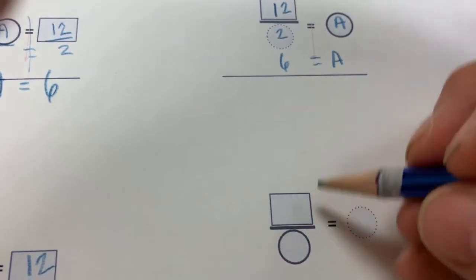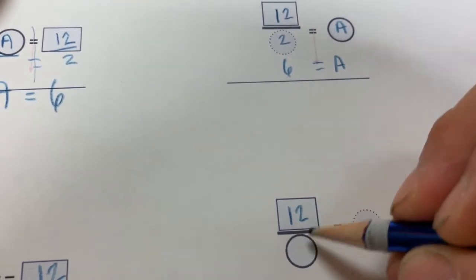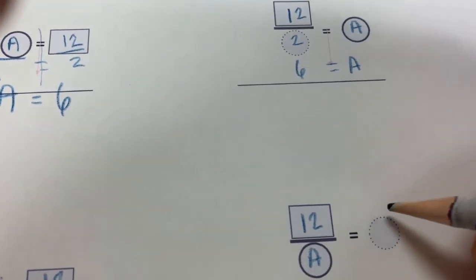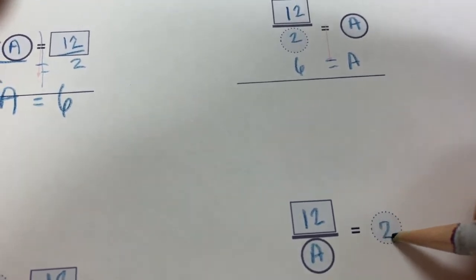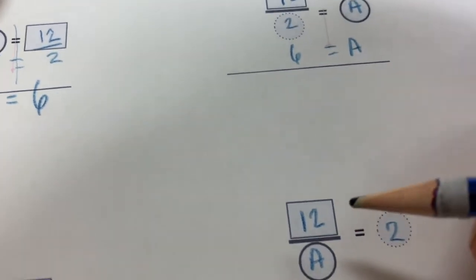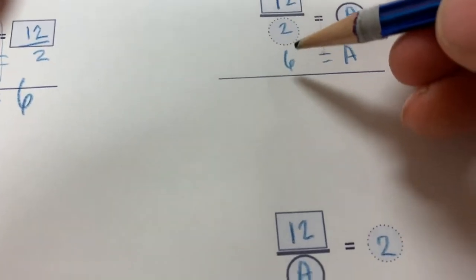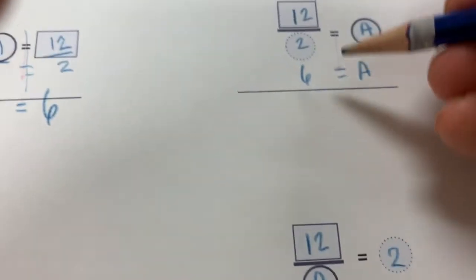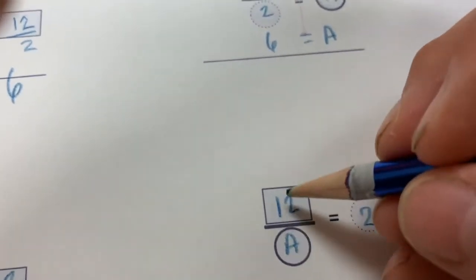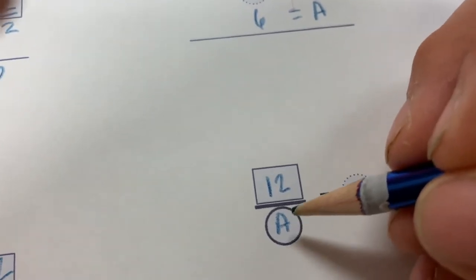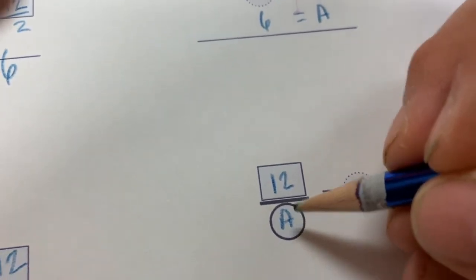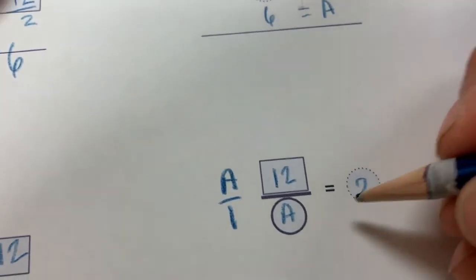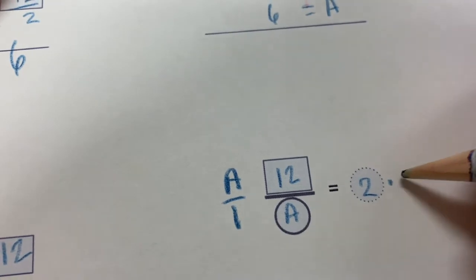This is going to be the most complicated by far. 12 divided by A equals 2. Now what you have to do is the same thing we've been doing formulaically up here. See what's happening to the numerator and do the opposite to it. So up here, we've got 12 divided by A. We've got to get the A out of the denominator. So I'm going to multiply this by A over 1, and I have to multiply this side by A as well.